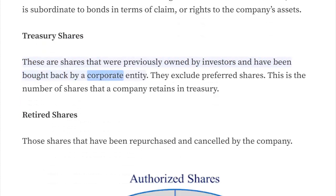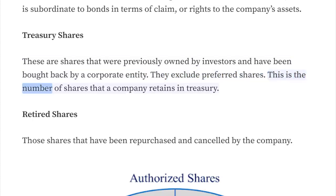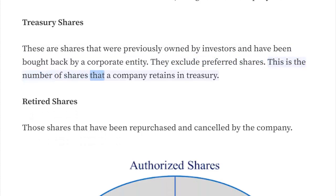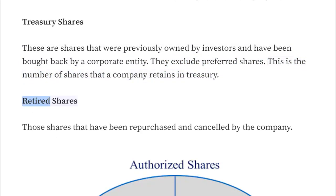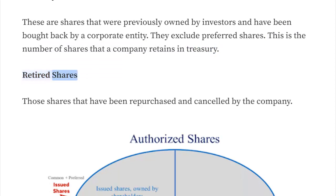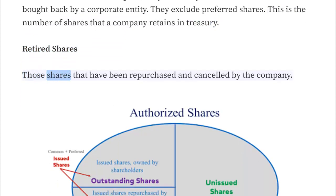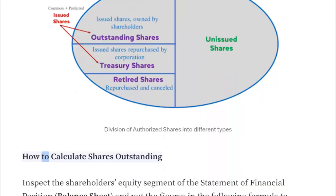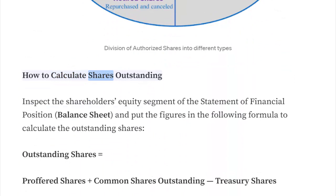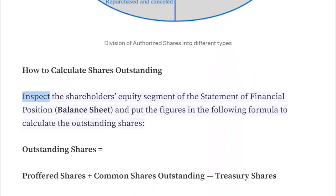Treasury shares are shares that were previously owned by investors and have been bought back by a corporate entity. They exclude preferred shares. This is the number of shares that a company retains in treasury. Retired shares are those shares that have been repurchased and cancelled by the company.